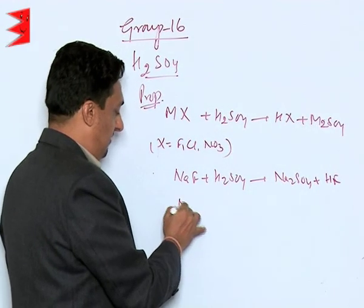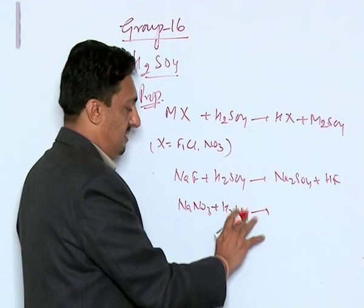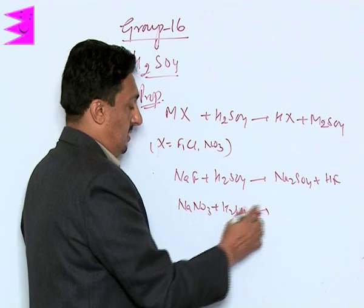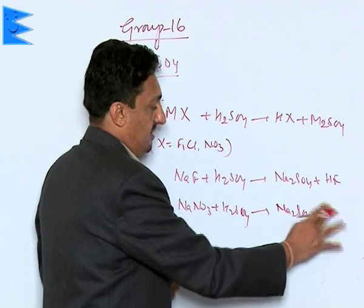In a very similar way, if we are having sodium nitrate in presence of sulphuric acid, what we get is Na₂SO₄ plus HNO₃.